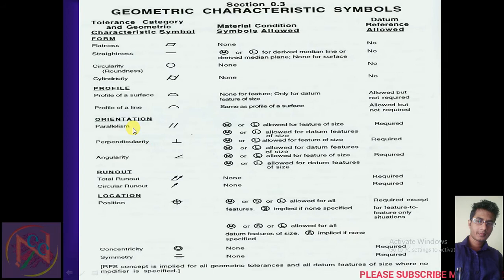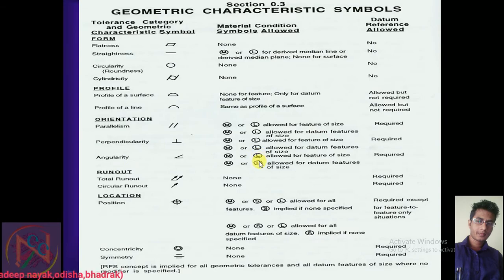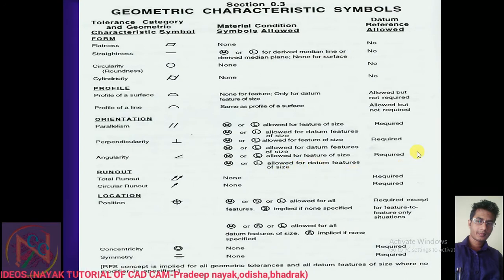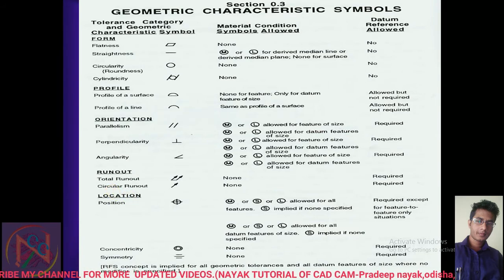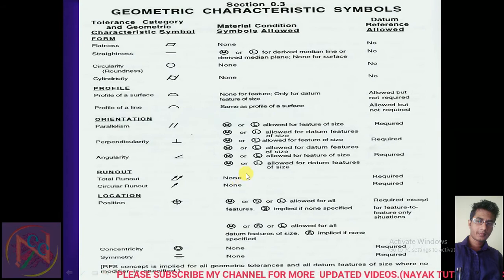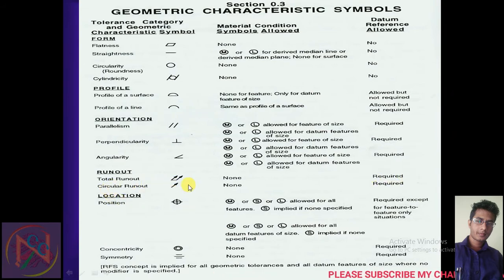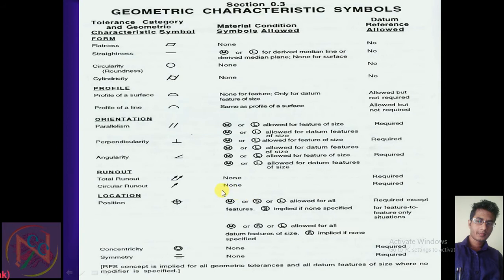The third classification is runout — total runout has material condition applied and the datum requirement is required. For angularity, the maximum or least material condition is allowed, and the maximum or least allowed for datum feature size is needed. For location — position, in this case, the material condition applies.